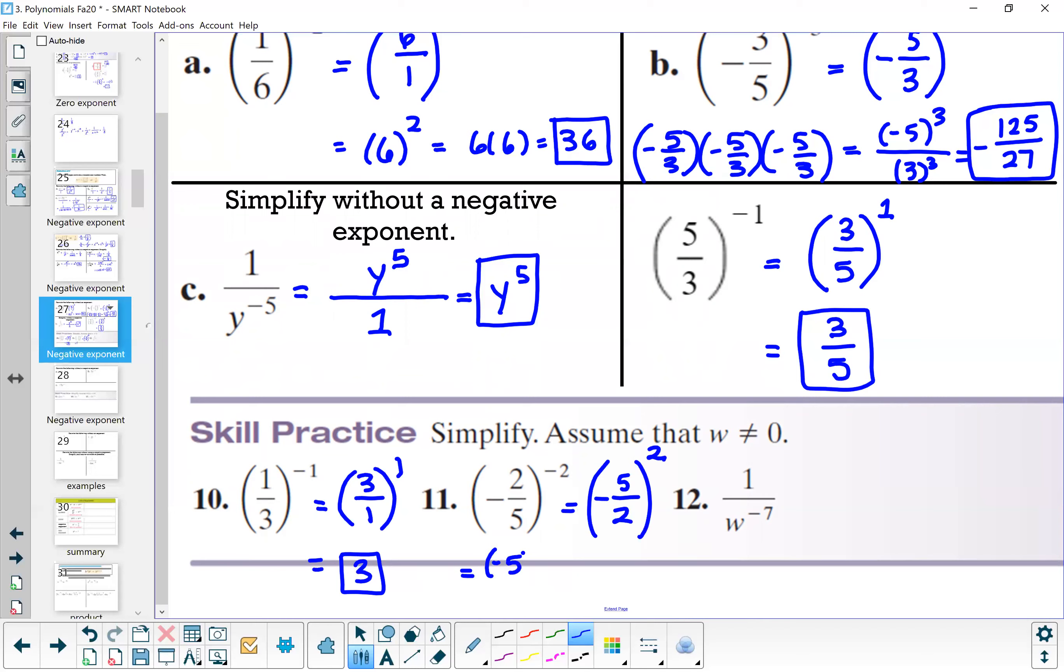Lastly, I have 1 over w to the negative 7. I want to take w to the negative 7 across the fraction bar, so that's going to go into the numerator. So now I have w to the seventh power over 1. We don't need the over 1. We can just write w to the seventh power.